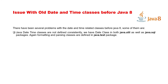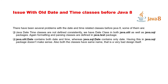Formatting and parsing classes are defined in the java.text package. So java.util.Date and java.sql.Date have the same class name, but java.util.Date contains both date and time, whereas java.sql.Date contains only date. Having a date class in the java.sql package does not make sense, and both classes having the same name is very bad design.